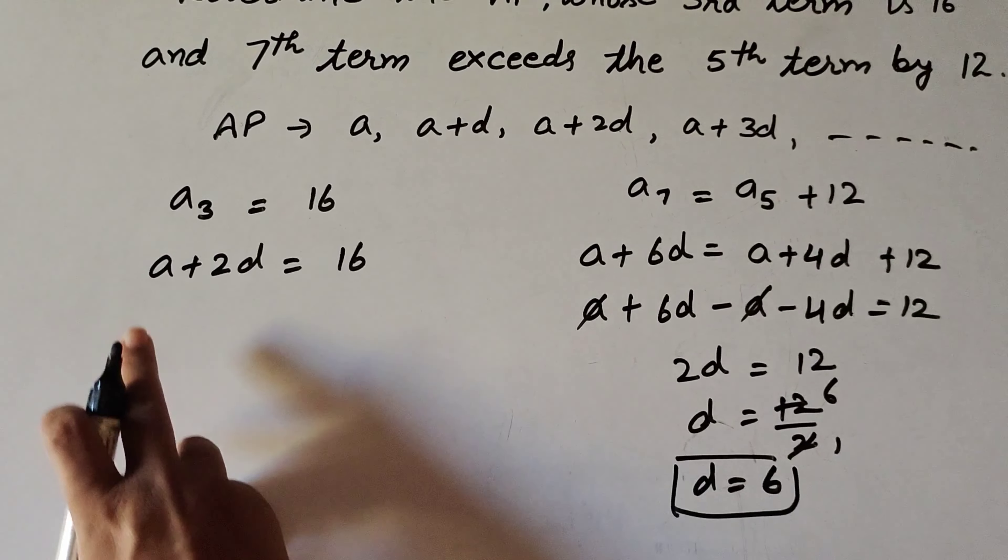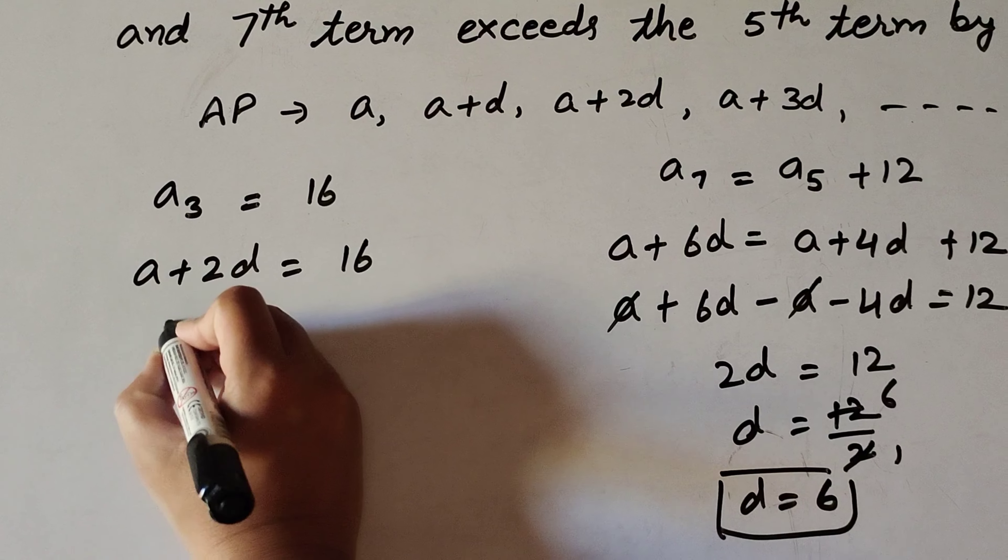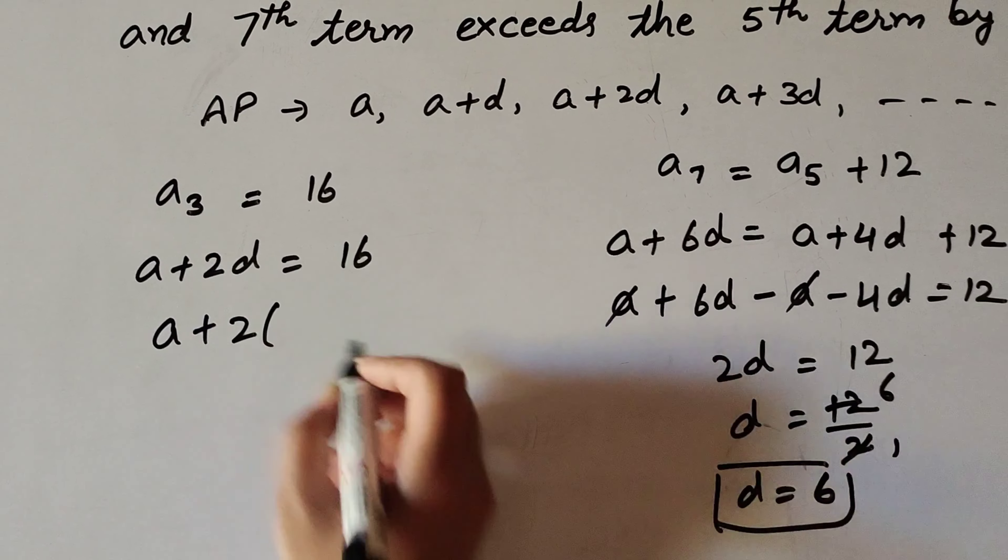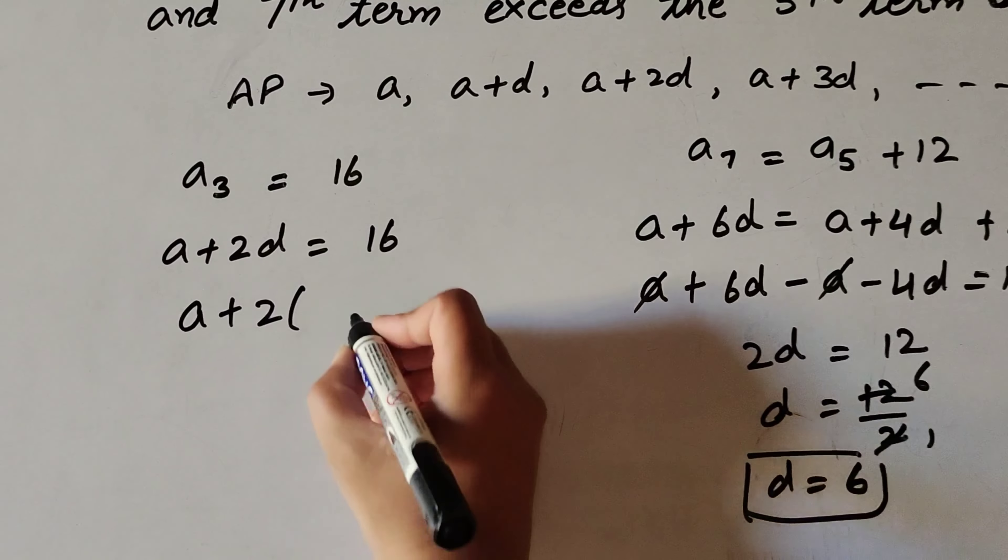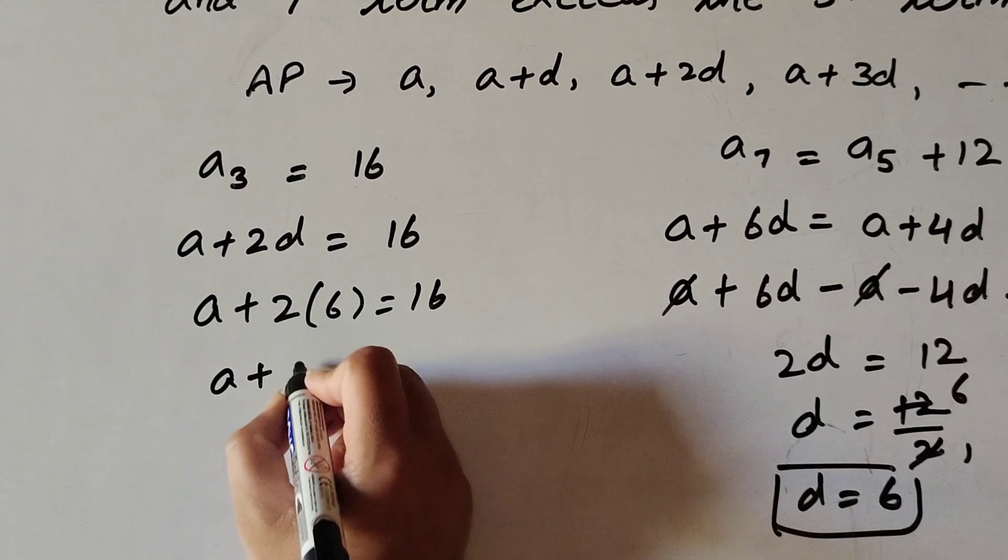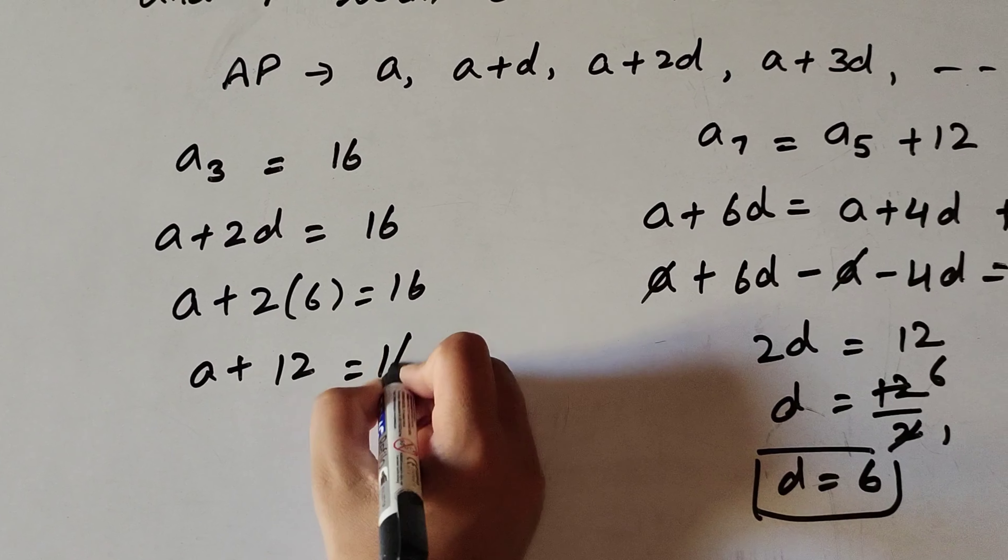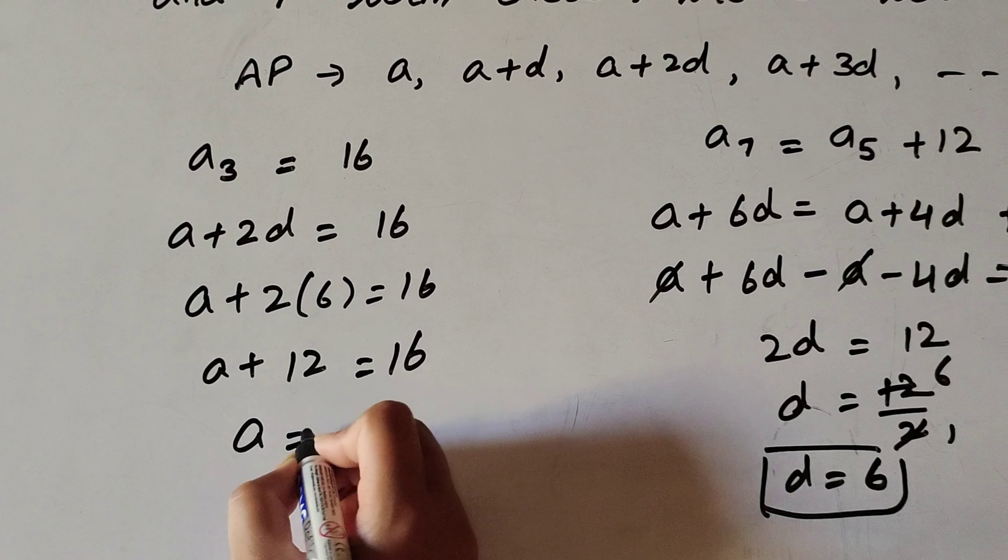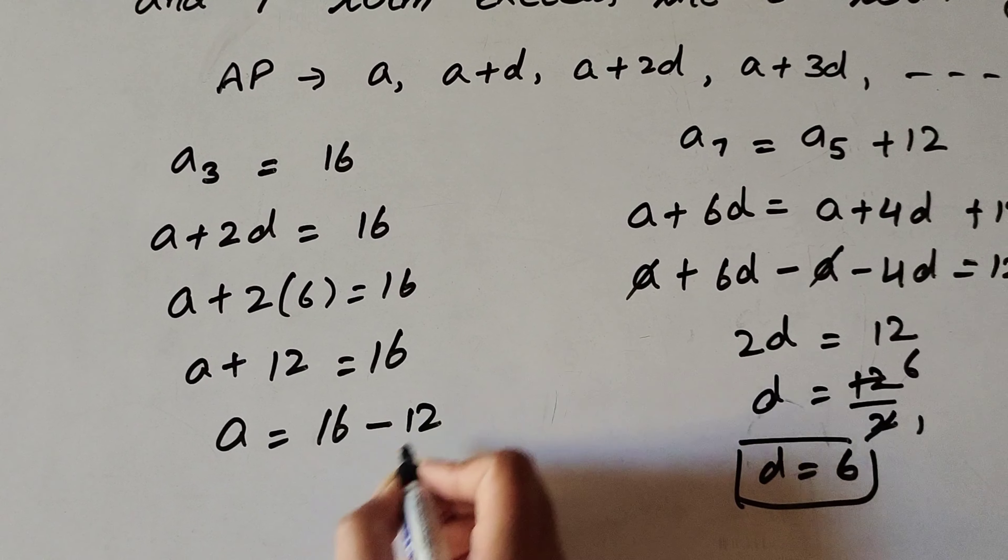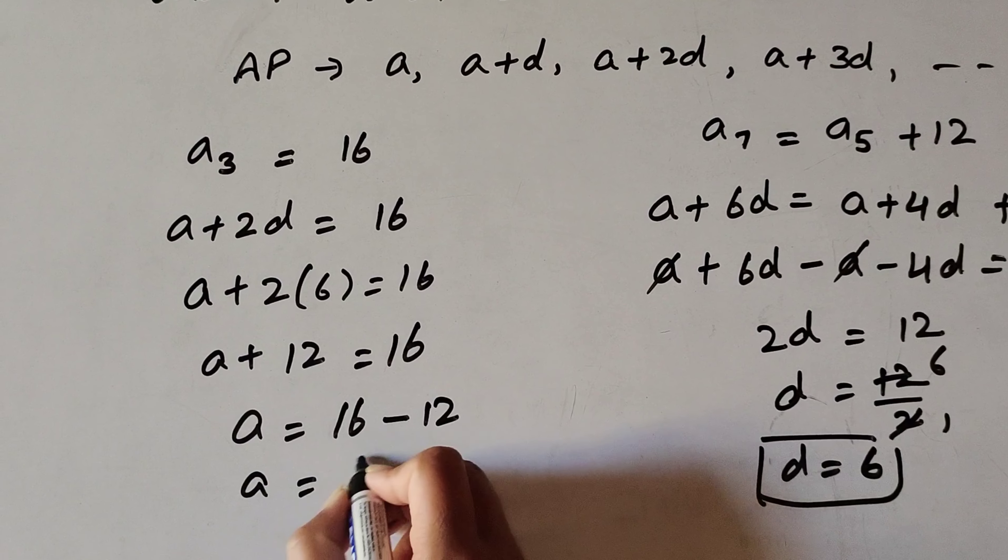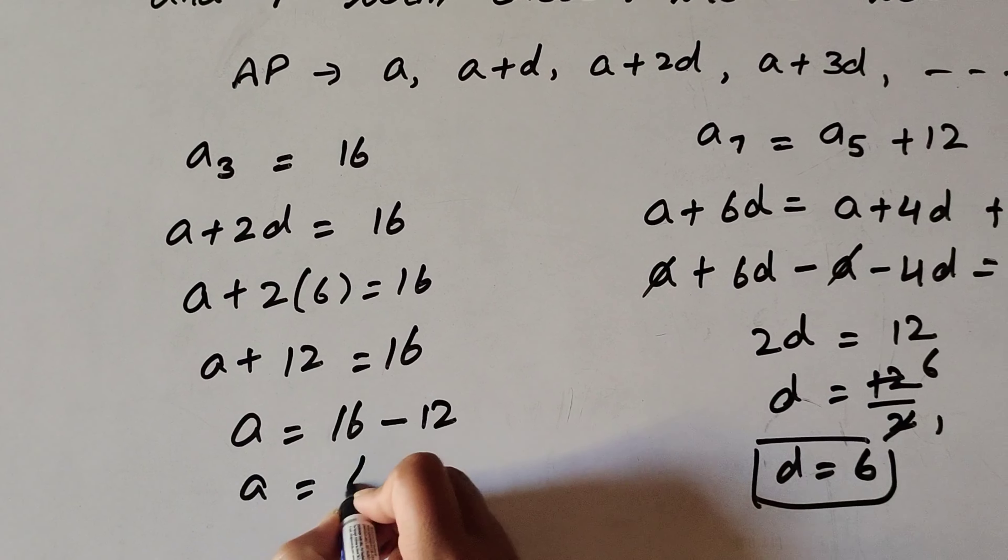Now we find the first term of the AP. So a plus 2d, where d equals 6, equals 16. Therefore a plus 12 equals 16, and a equals 16 minus 12, which is 4. So first term is 4, common difference d is 6.